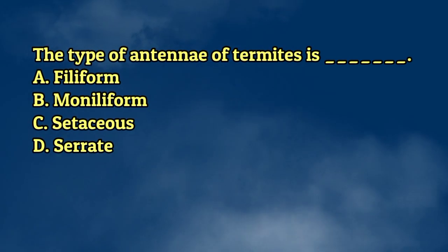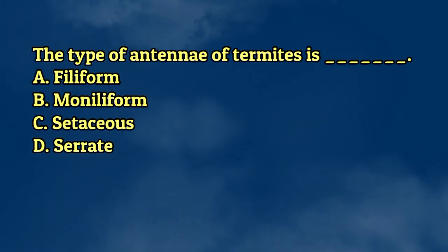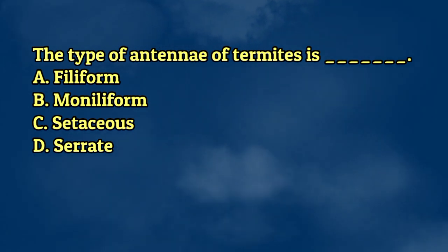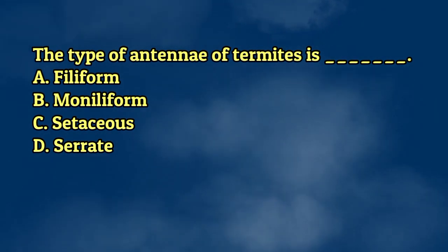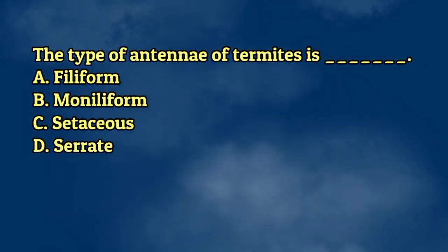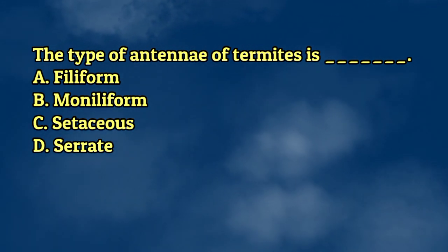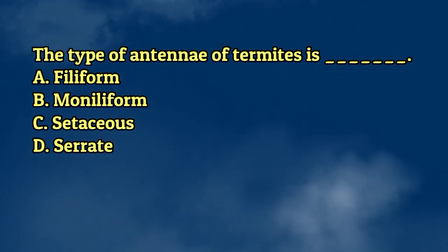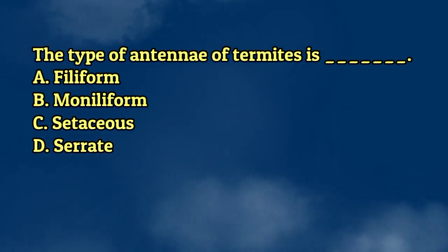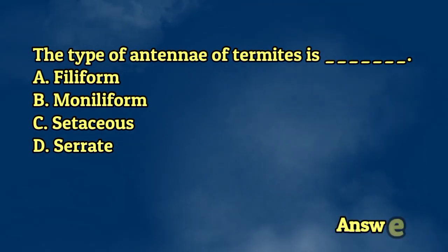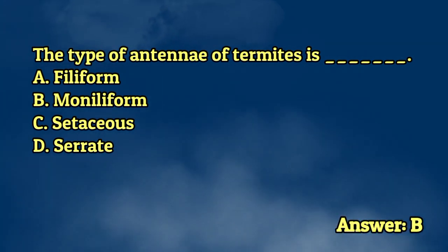The type of antennae of termites is. A. Filiform. B. Moniliform. C. Setaceous. D. Cerate. The answer is letter B.